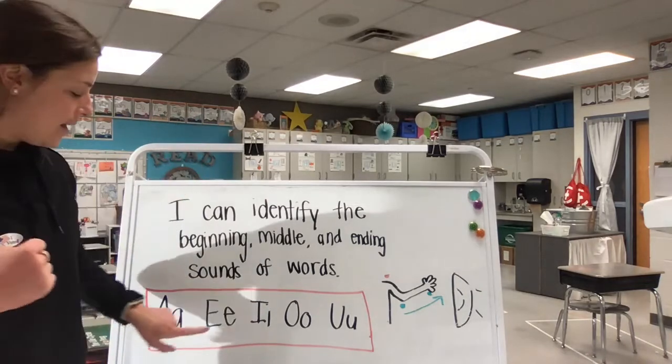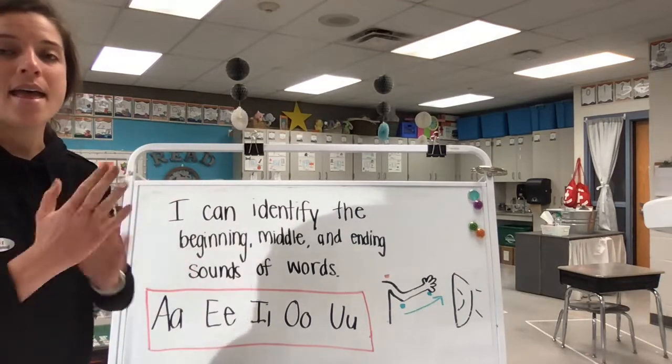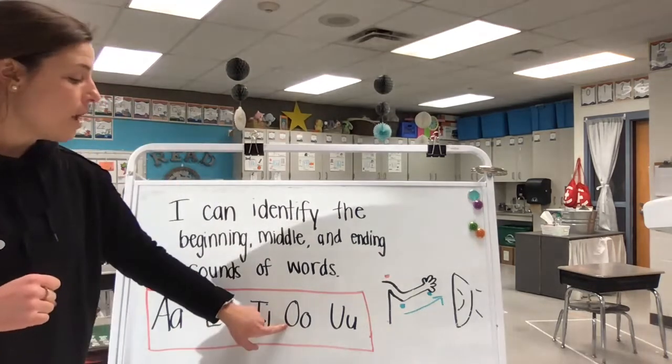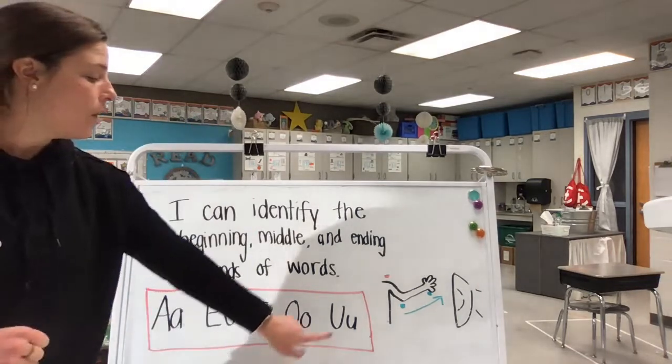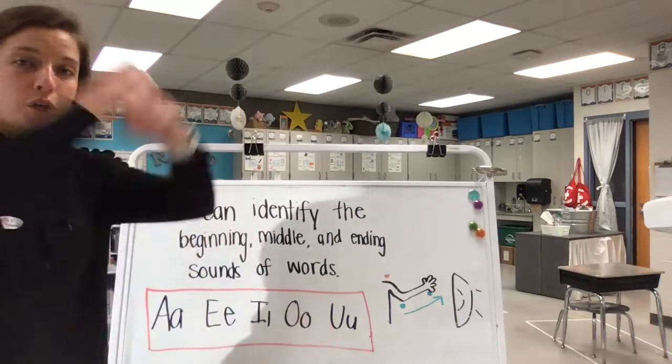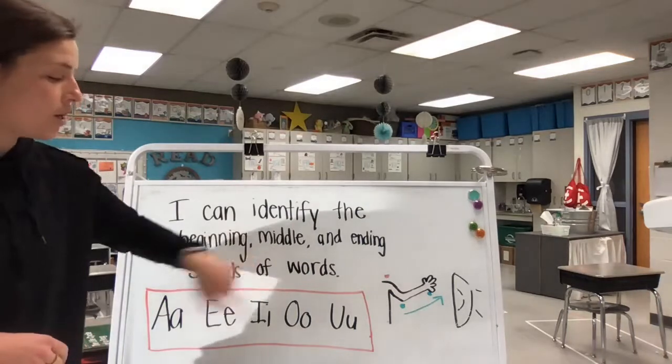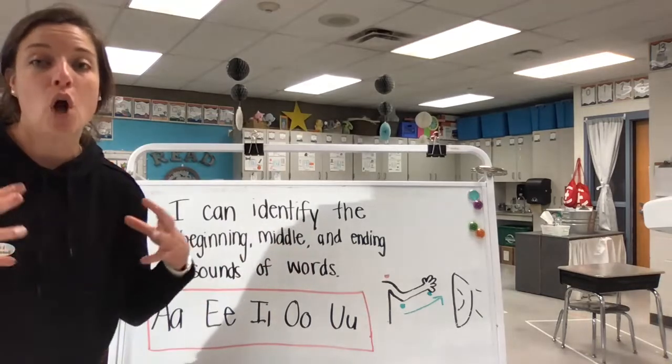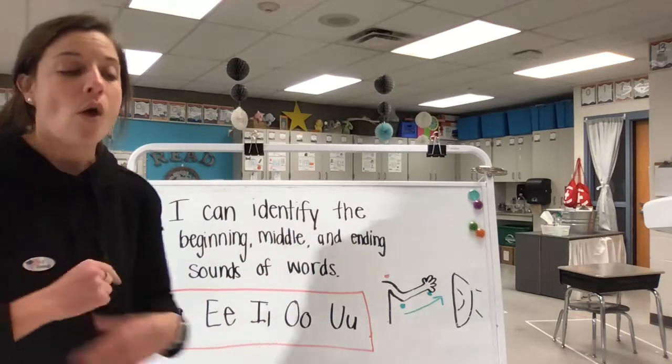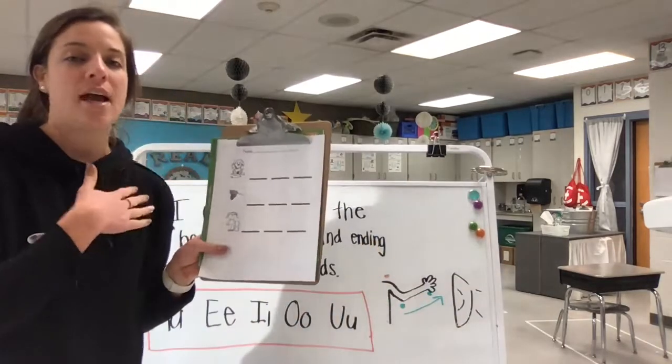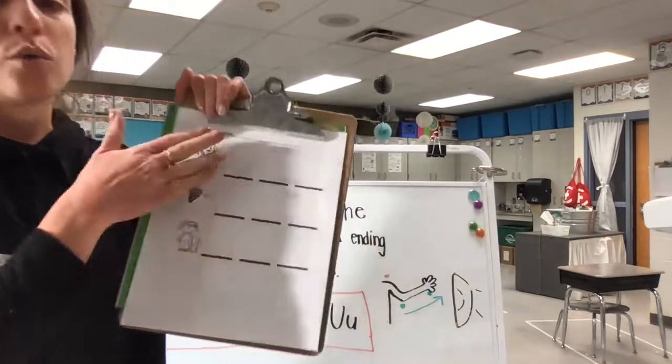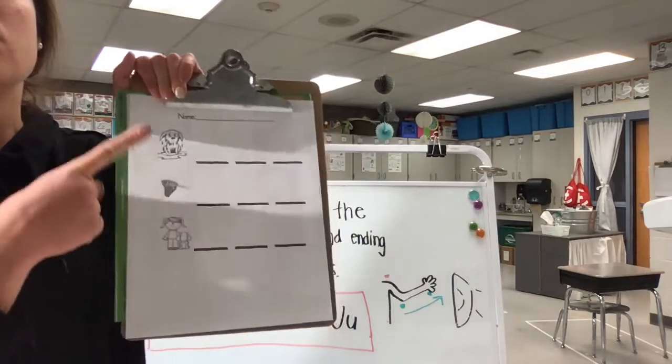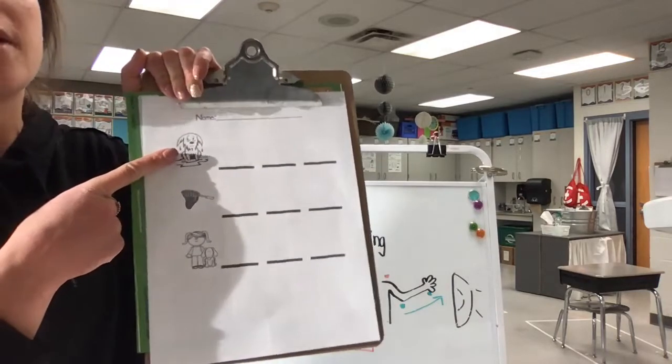Now let's say both of our sounds for each of those letters. A, A. E, E. I, I. O, O. U, U. Very good. So each one of these letters has a short sound but then they also say their name and have a long sound. Excellent job. So we're going to use what we know about our letter sounds and vowels to help us write our words to match the picture.